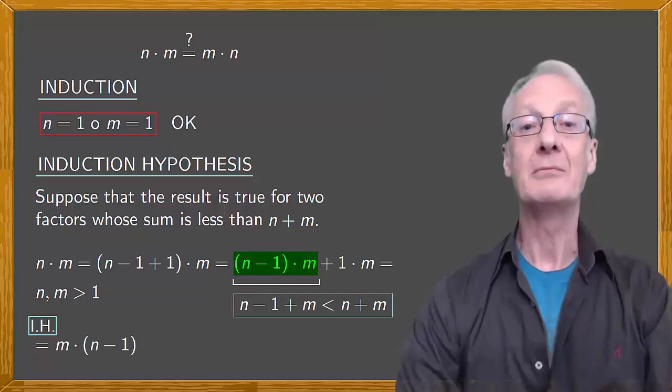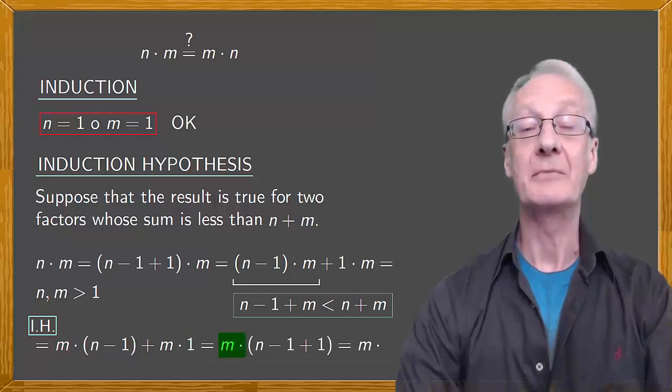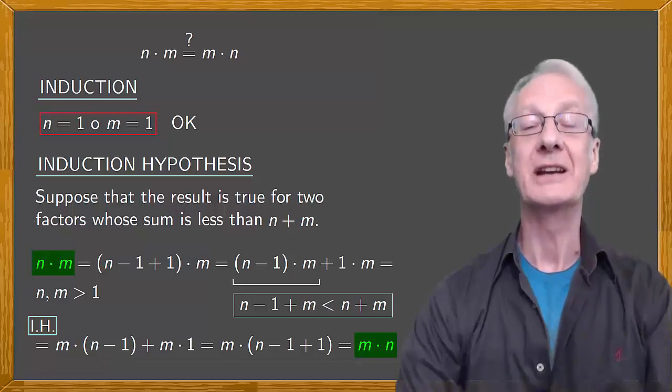We have m multiplied by n minus 1 plus 1 times m, or m times 1. There's a common factor of m, which multiplies n minus 1 plus 1, which is m times n. Good. We've shown that n multiplied by m is equal to m multiplied by n, and we've demonstrated the commutative property of products.